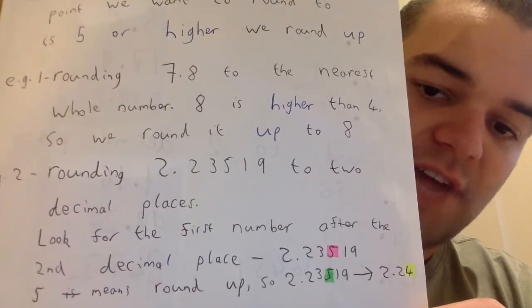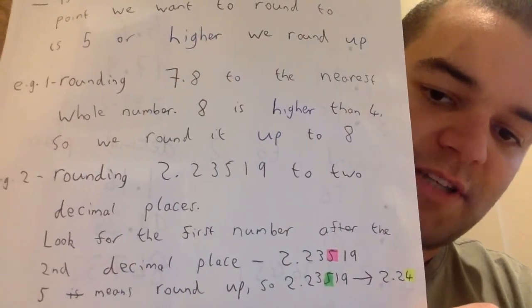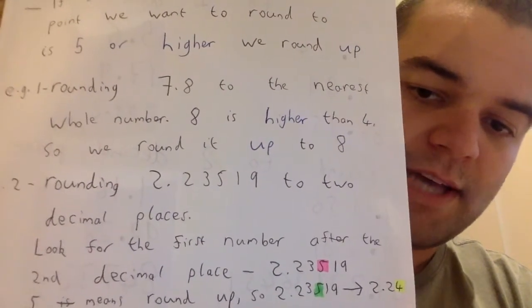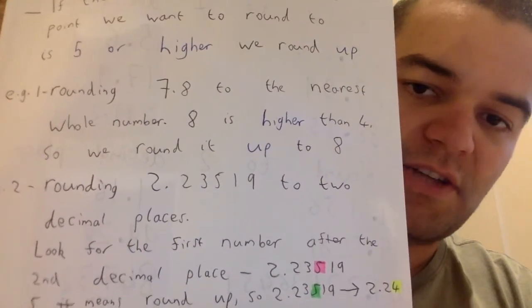So because it's 5, that means I round up. So it goes from being 2.23 something to 2.24. So I've rounded it up to being 2.24.